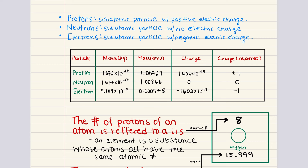There are three subatomic particles: protons, neutrons, and electrons. Starting with protons — protons are found in the nucleus of an atom. Each proton has a charge equal to the fundamental unit of charge, about 1.6 times 10 to the minus 19 coulombs, denoted as a plus one charge. Protons also have a mass of approximately one atomic mass unit, or about 1.67 times 10 to the minus 27 kilograms.